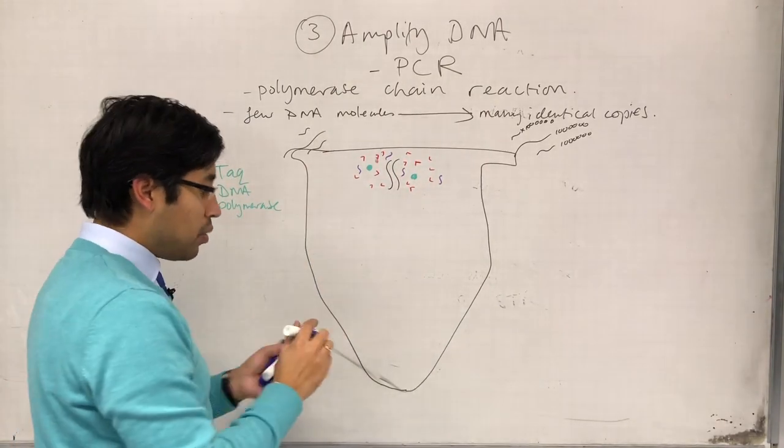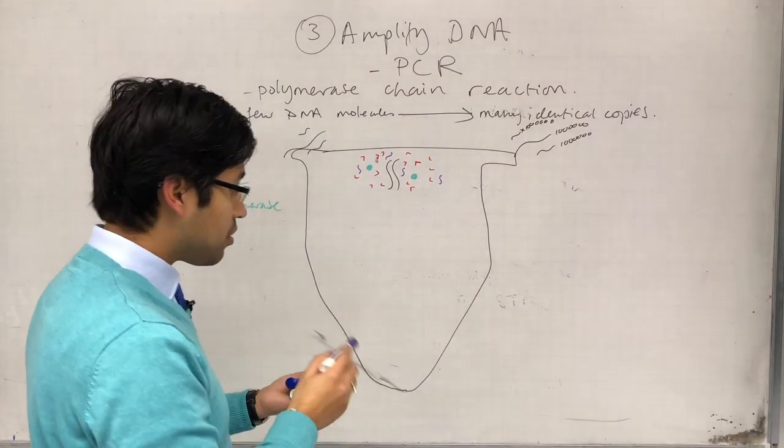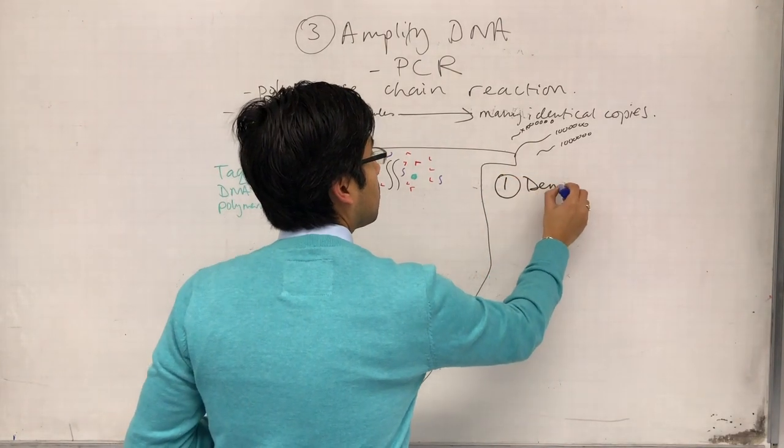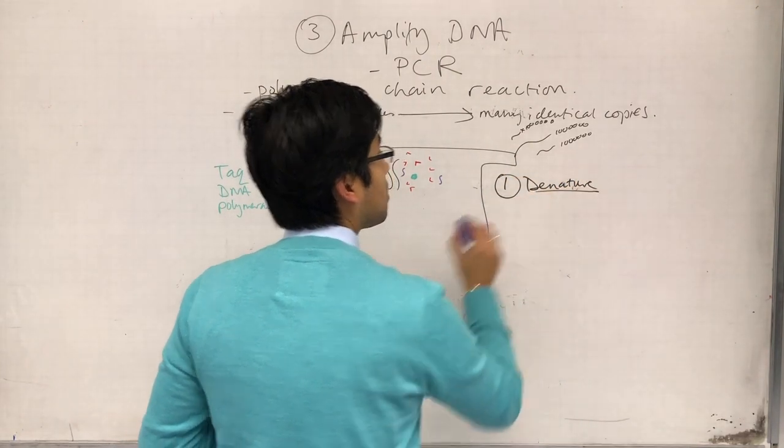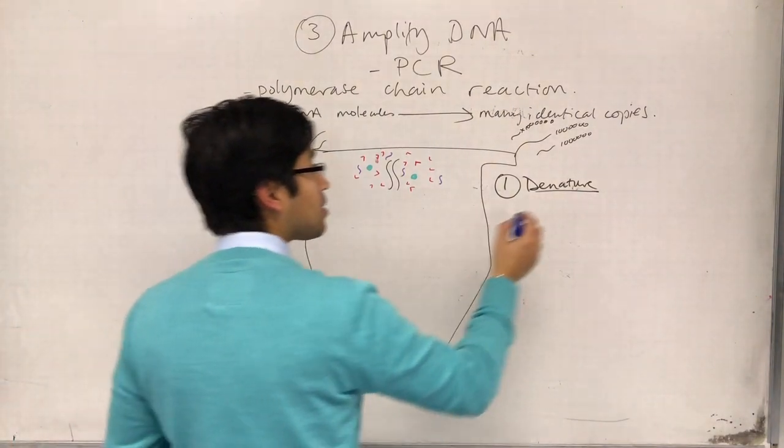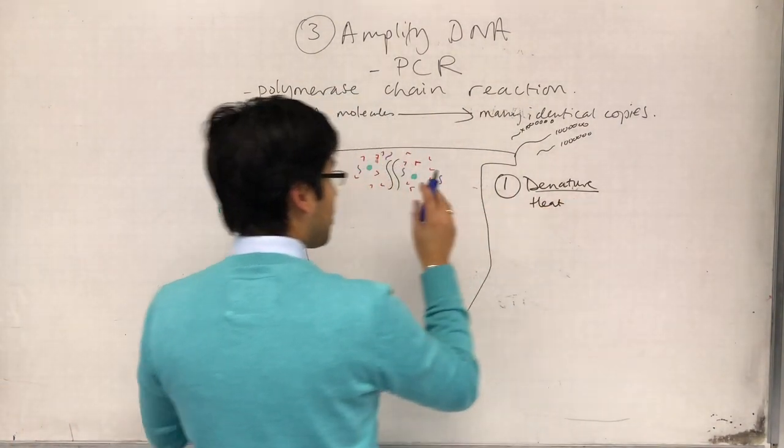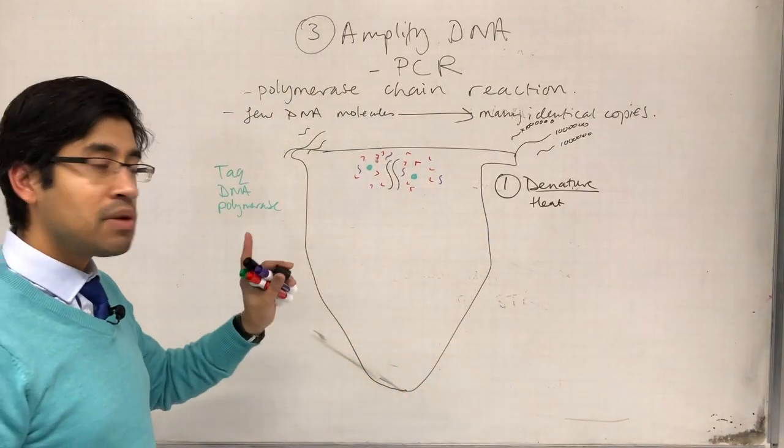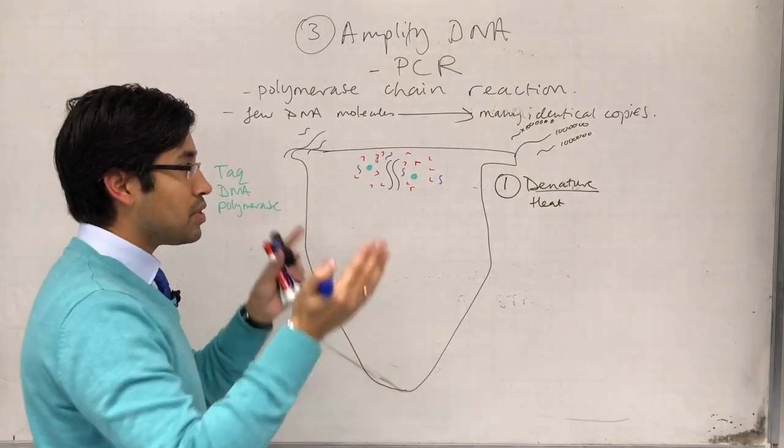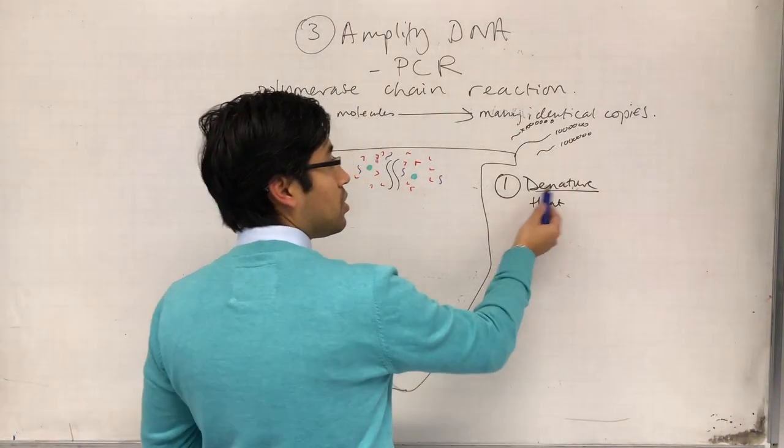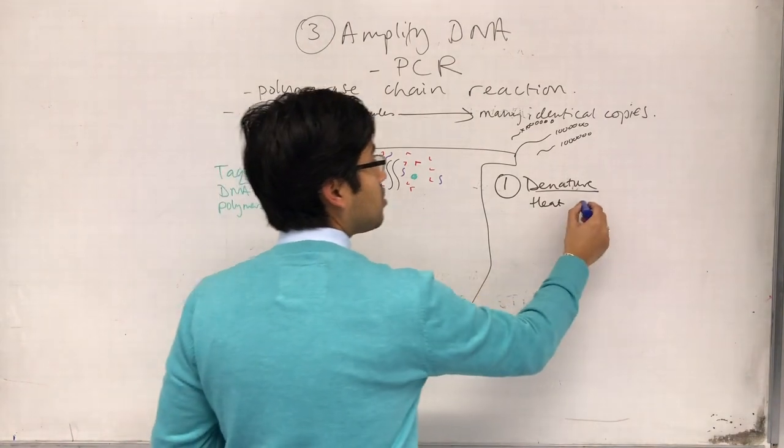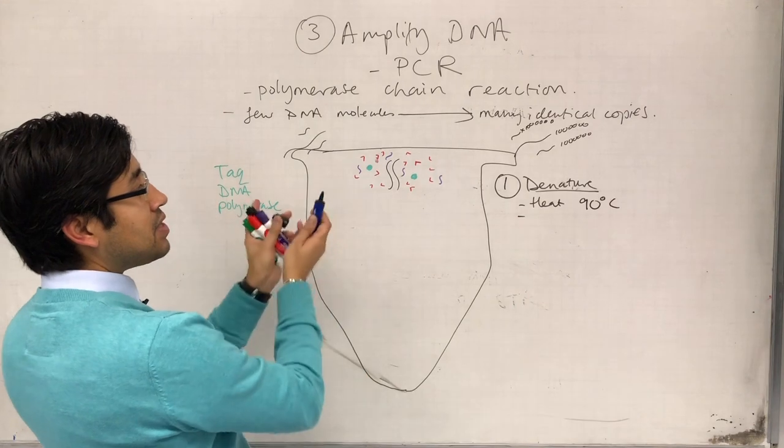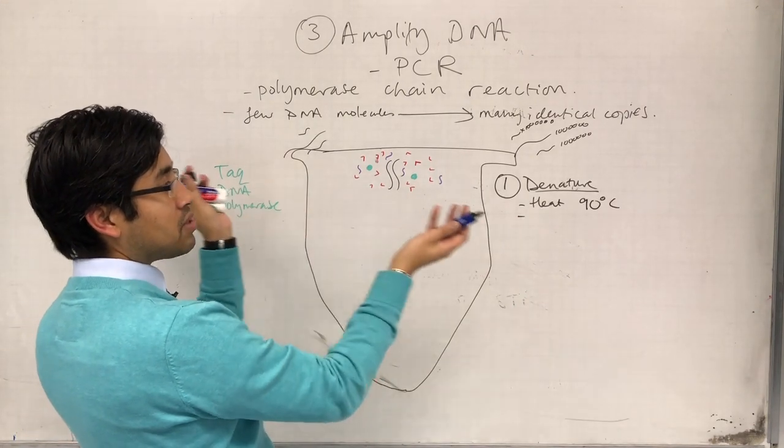Okay, so we've got all those components in there, and the first thing that we do is, first stage, denature. We heat our tube in the little machine, just heats it. Basically, you'll see that the PCR machine is nothing more than a little oven that raises and lowers the temperature in cycles. So, we denature, so we heat up the mixture to about 90 degrees Celsius.